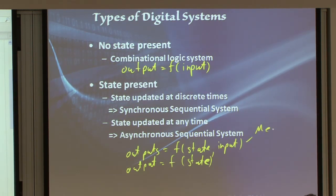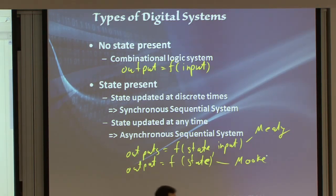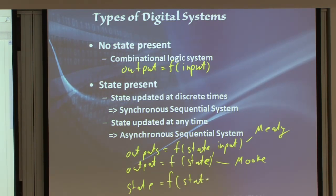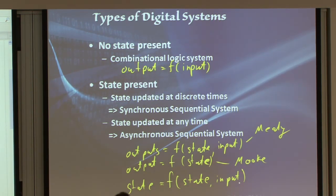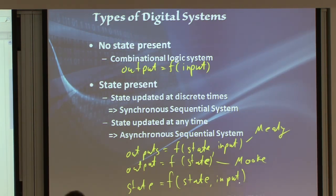We have names for these. The case where the output depends on both state and current inputs is called a Mealy machine or Mealy model. The case where output depends solely on the state is called a Moore model. We will talk about them in length in week six or seven.